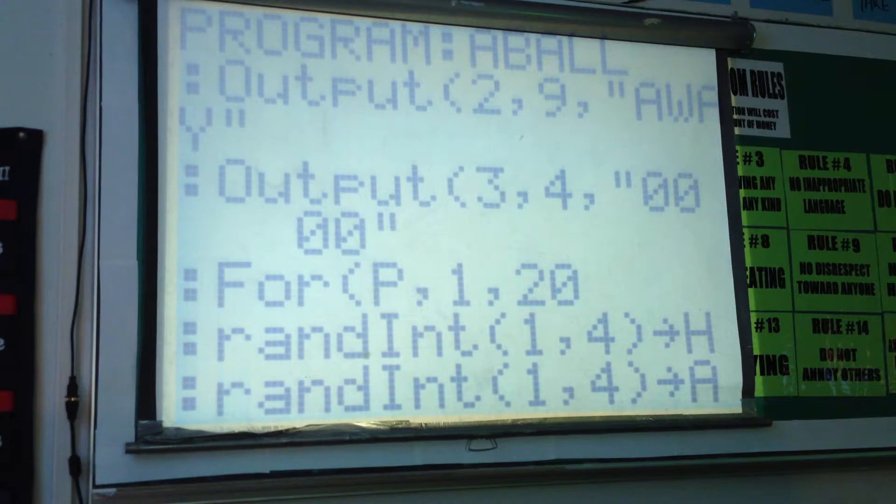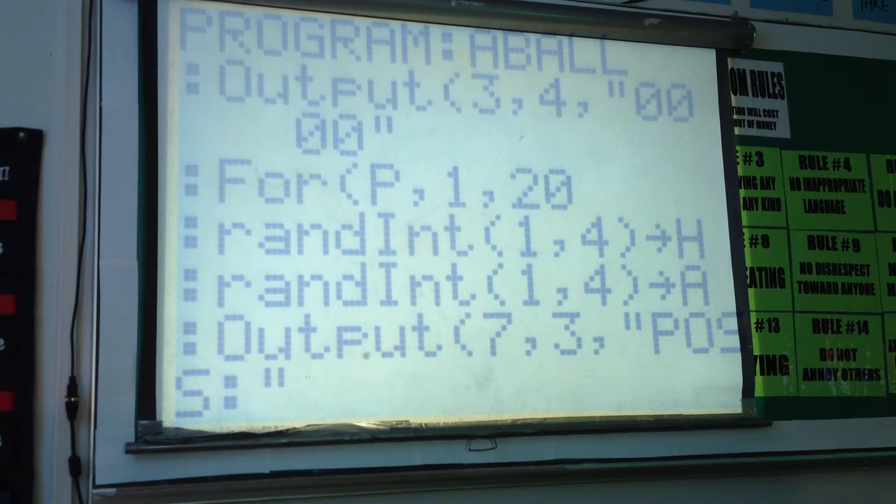The P loop is the number of times the program will run. P stands for possessions. We're choosing random integers from one to four for home and away.